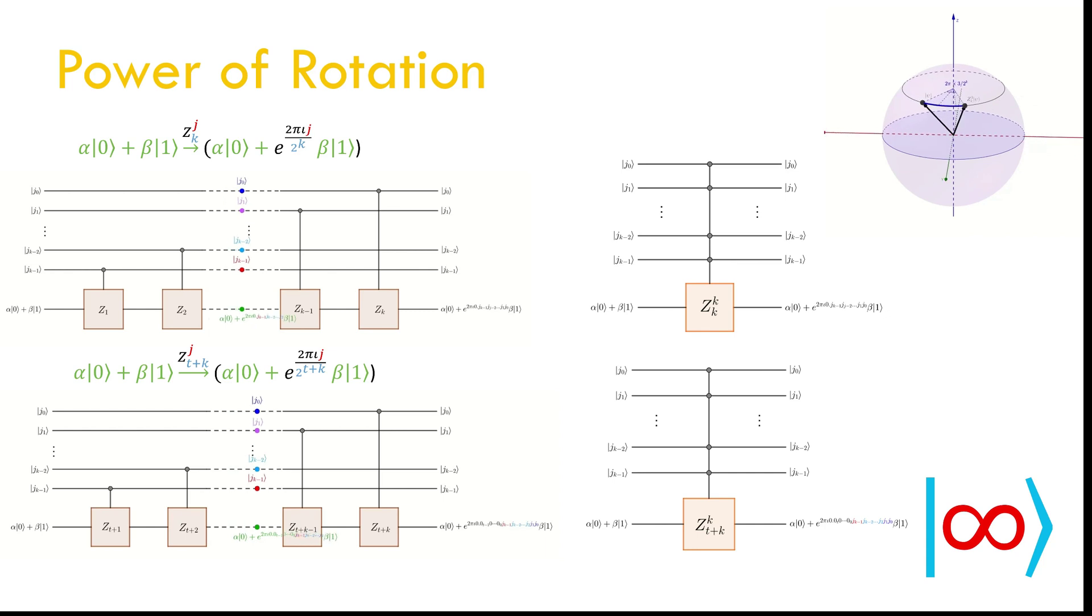We extend this logic to account for the extra power t of 2. Here we start with zt plus 1 gates and go all the way to zt plus k gates. This new family of gates will be used later.